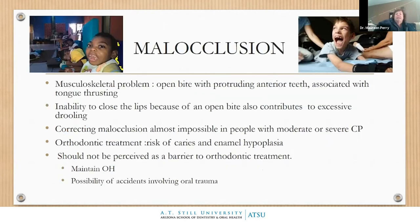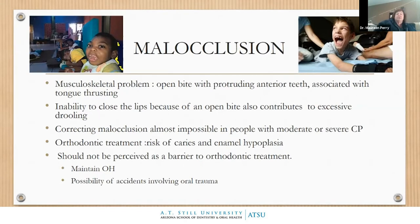What can we do about the malocclusion — this open bite, tongue thrusting, and inability to close the lips? Patients often can't close their lips because of the tremendous open bite, leading to dry mouth and mouth breathing, which can also lead to fungal infections. You might see bright red gingiva on mouth breathers — often that's actually fungal. For patients with a really severe open bite, correcting the malocclusion may not be possible because you're always fighting the muscles of mastication, the tongue, and oral facial muscles — they're too strong for ortho.